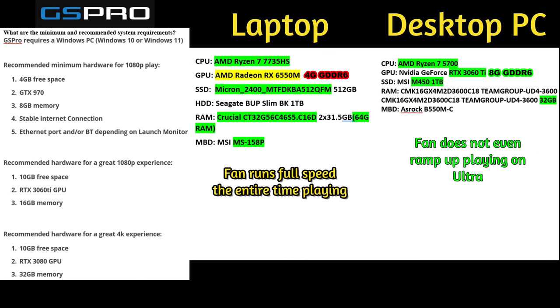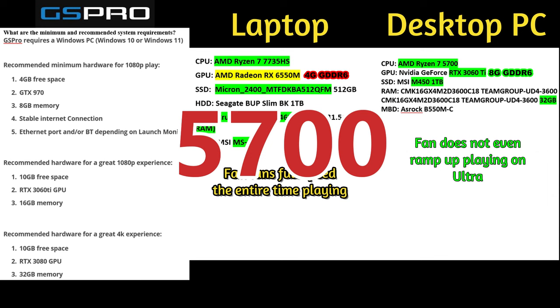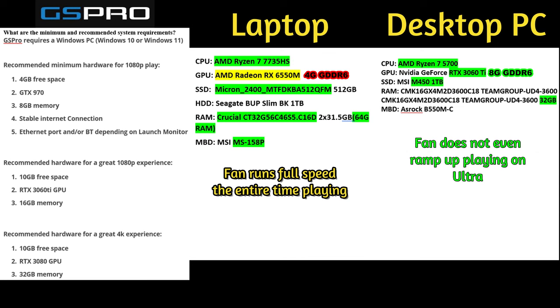Looking at the desktop PC on the right of the graphic: the CPU is an AMD Ryzen 7 5600, and the GPU is an Nvidia GeForce RTX 3060 Ti with 8 gig of GDDR6 — more than adequate, and exactly what GS Pro recommends for a great 1080p experience. The SSD is a 1TB MSI M450. It initially had 16 gig of RAM, which I upgraded to 32 gig for under $60. I've played about 20 golf courses and the fan has not ramped up even once — I can't even hear it.